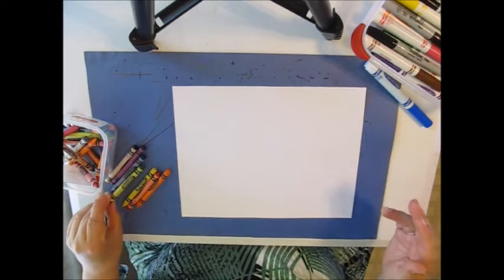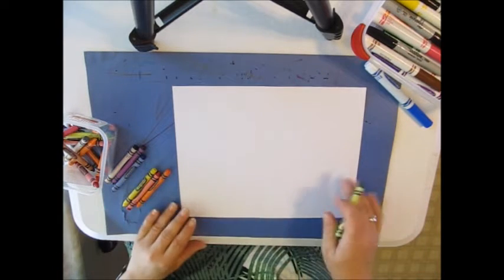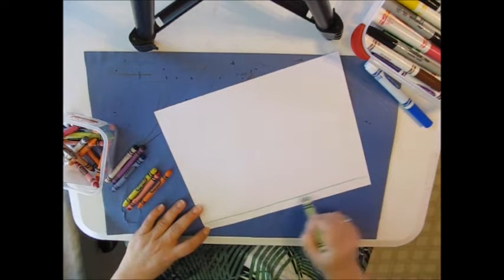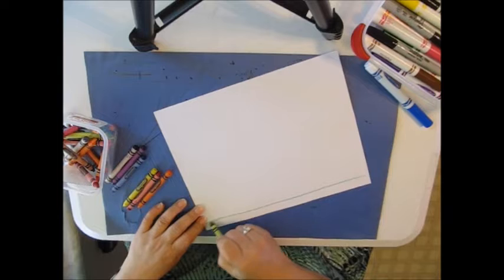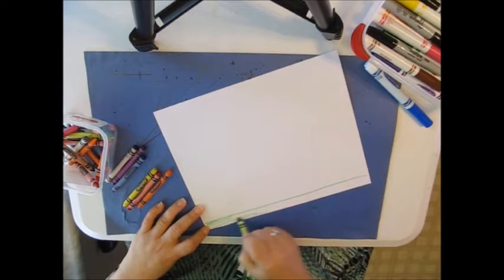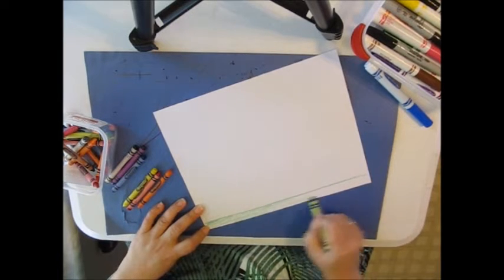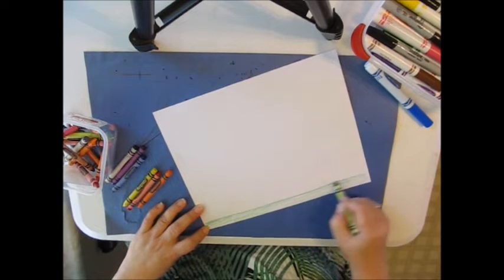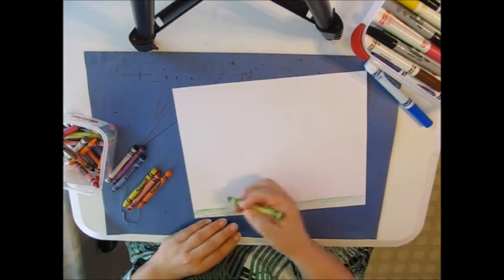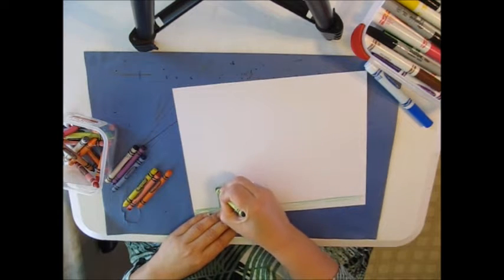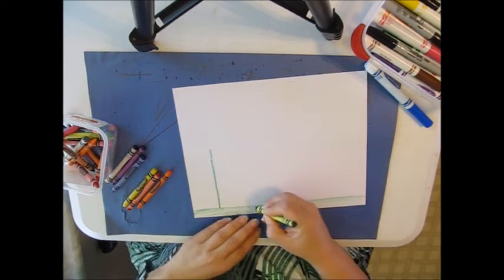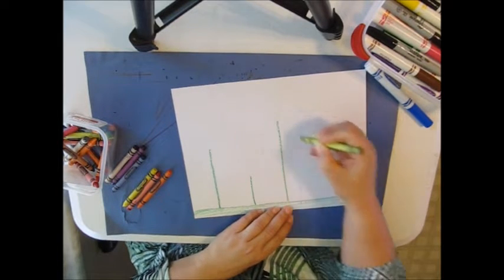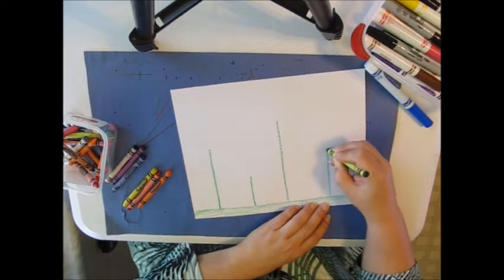So first of all, let's draw some flowers. Well, the flowers grow from the ground. So I'm going to put some ground here and then I'm going to draw four flowers and make them different heights. So it makes the picture interesting. I'm going to make a tall one, maybe a short one, a taller one, and a medium sized one.